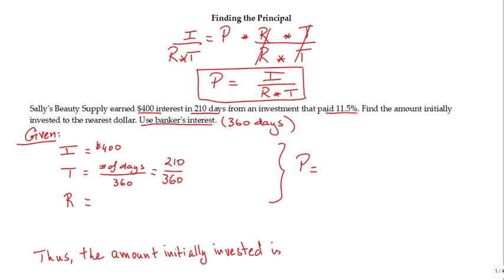And the rate is 11.5%. We're going to change that to decimal, which is 0.115. That's 11.5 divided by 100, which equals 0.115.